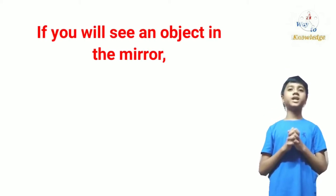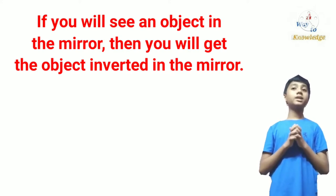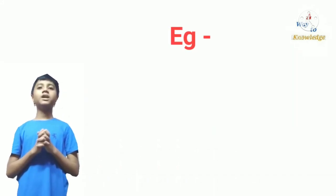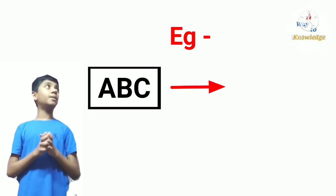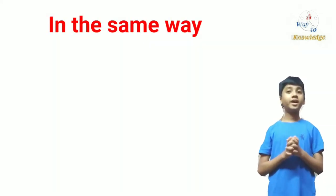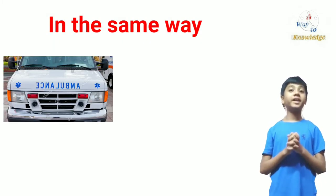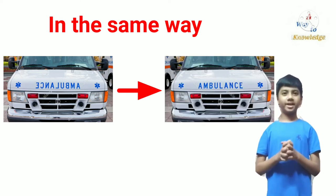But first let's know about the mirror. You might have noticed that if you see an object in the mirror, you get the object inverted. For example, if you see this image in the mirror, you will get the image like this. In the same way, if you see the inverted word ambulance in the mirror, it will be seen correctly in the mirror.